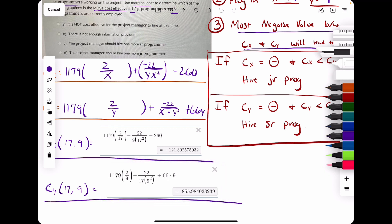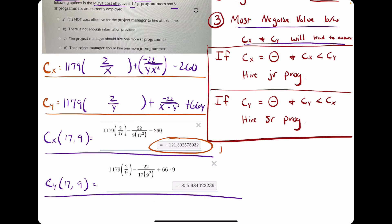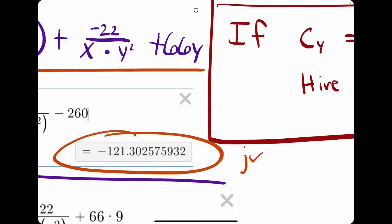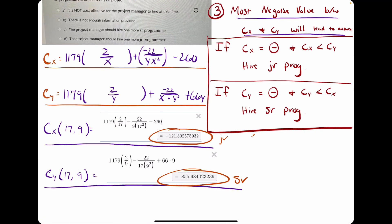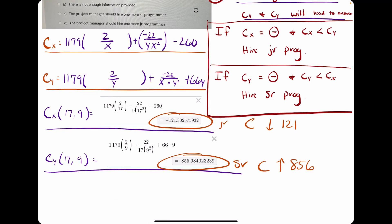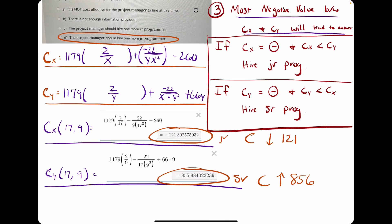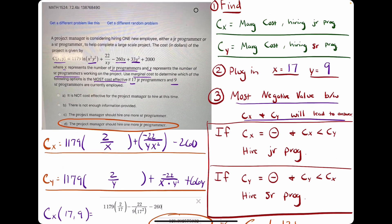So what we have here are the partial derivative values. Basically, the marginal cost for hiring a junior programmer versus hiring a senior programmer. So what this says is that if we hire a junior programmer, the cost will go down by $121. If we hire one more senior programmer, the cost will go up for the company by $855 or $856 even. Which means the one that's more cost-effective for the company is the one that's going to bring the cost down. And so we want to hire a junior programmer. So we're looking for the more negative answer. So this one, negative 121, is our more negative answer.